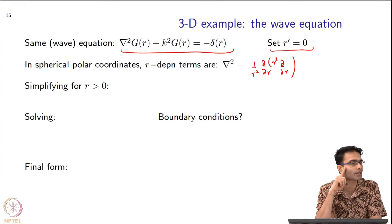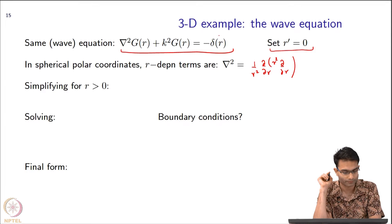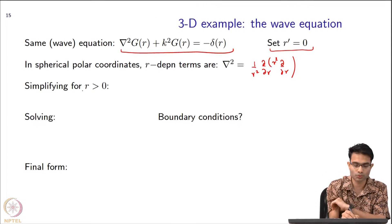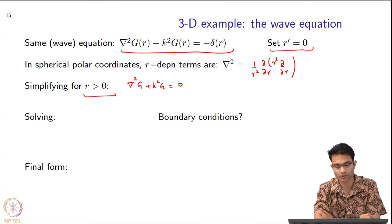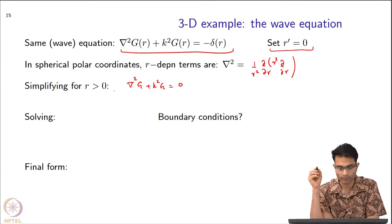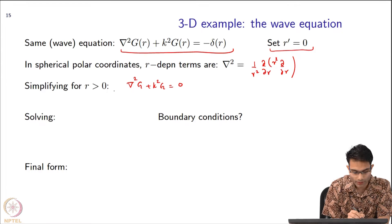For the third term, we just need to keep in mind that it is a 3D delta function. Earlier it was a 2D delta function, and before that a 1D delta function. We will repeat the recipe we had previously: choose r greater than r-naught such that del squared g plus k squared g equals zero. First we solve this, then look at boundary conditions.